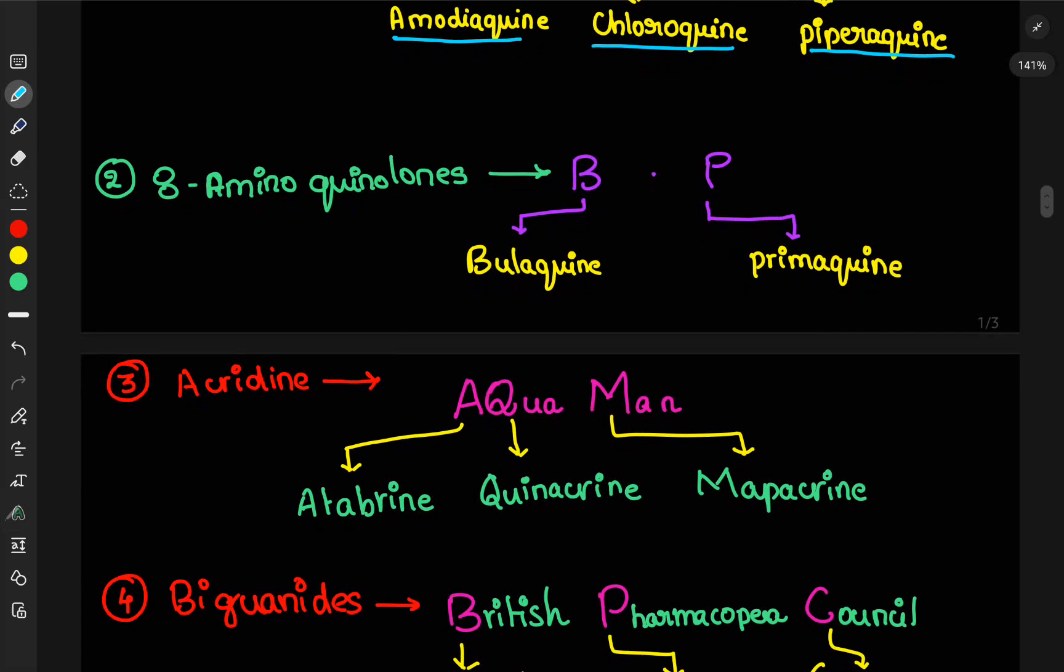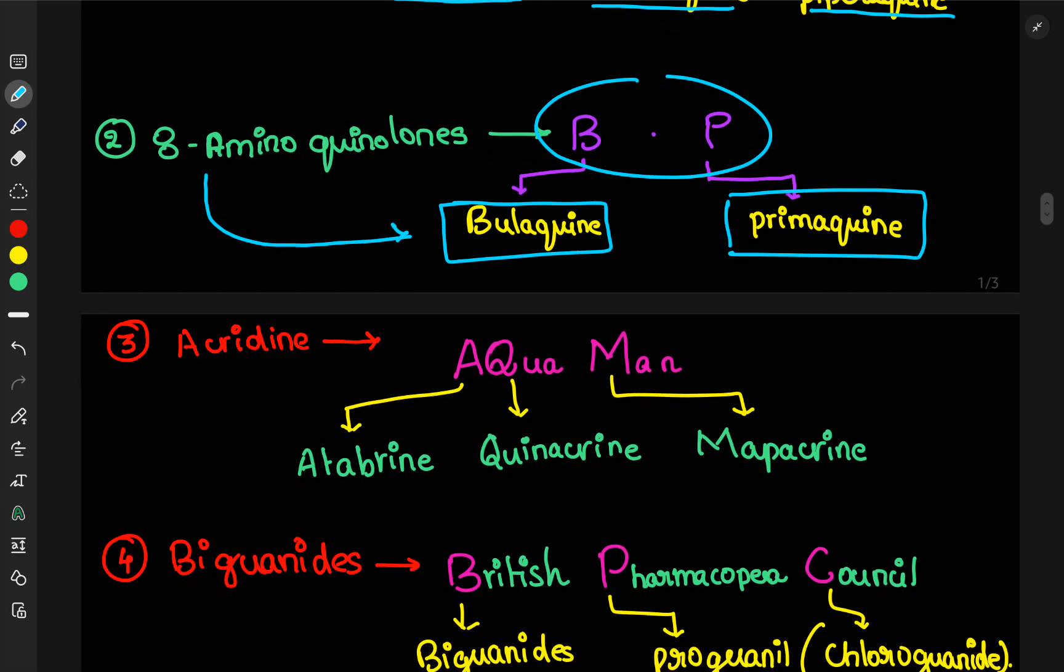Next, second one, 8-aminoquinolines. Here, by remembering the BP, you will be getting bulaquine, primaquine. These are the examples of 8-aminoquinolines. Like, you will get the direct questions based on the classification. If you remember the complete classifications in the pharmacology, you will be completing almost major, major portions of the syllabus. So, please remember everything that I have said in the slides.